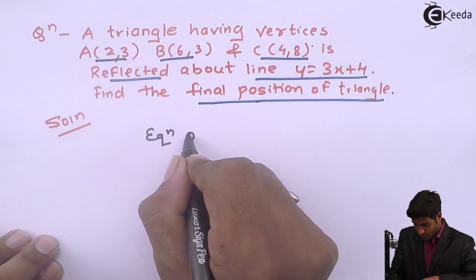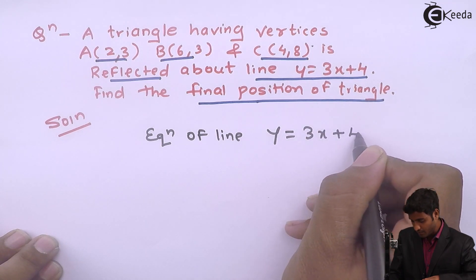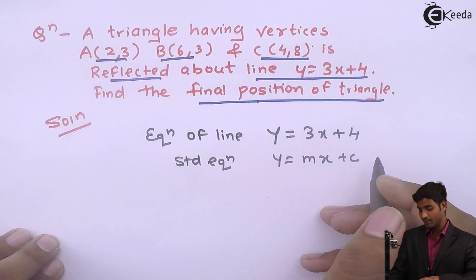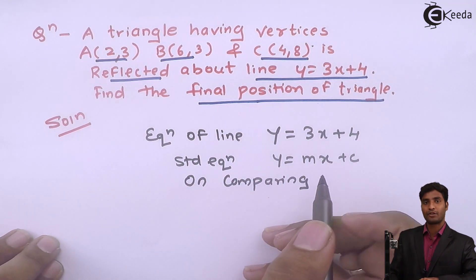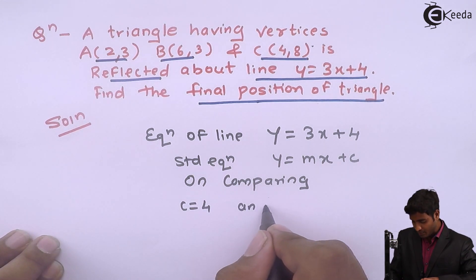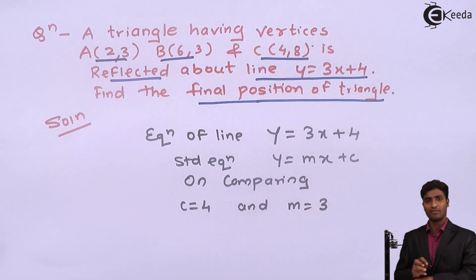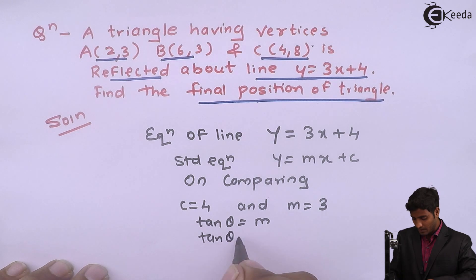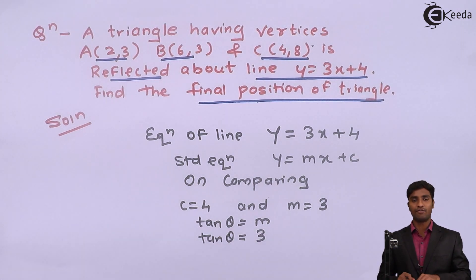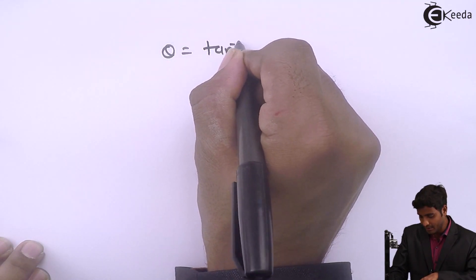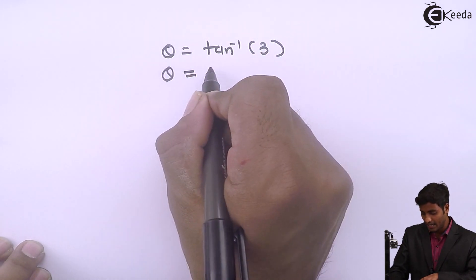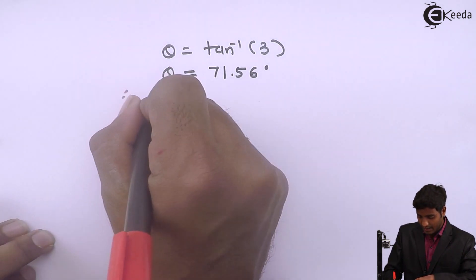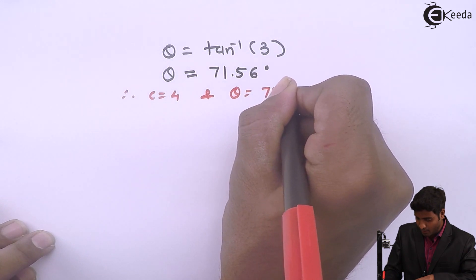The equation of the line is y = 3x + 4 and the standard equation of a line is y = mx + c. On comparing, we get the value of c as 4 and the value of m as 3. We will require the value of theta. We know that tan(theta) = m, and here m is 3, so theta = tan⁻¹(3) = 71.56 degrees.